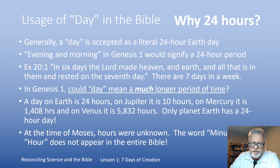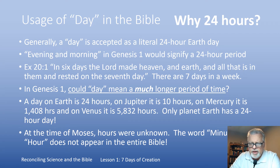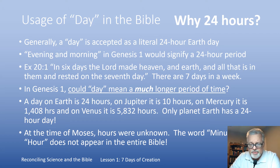A day on Earth is definitely 24 hours, sometimes a little more, sometimes a little less, so we have to adjust our calendars every now and then. But on Jupiter, a day is only 10 hours; on Mercury, it's 1,408 hours; and on Venus, 5,832 hours. Only planet Earth has a 24-hour day. At the time of Moses, hours were not known — they did not break their day down into 12 hours of day and 12 hours of night. The words 'minutes' and 'hour' do not appear in the Bible at all.